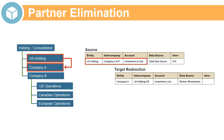Using partner elimination, the value in the Investment in Subsidiaries account for U.S. Holding is written to the Investment Link account with Company A as the target entity and U.S. Holding as the intercompany partner member. You can apply a factor and a processing option of Add or Subtract. Partner eliminations are written to the partner eliminations member in the data source dimension.